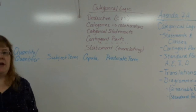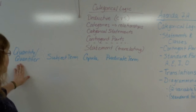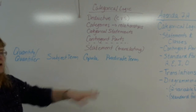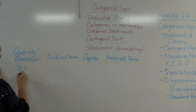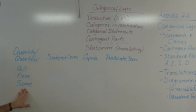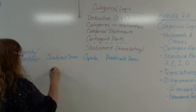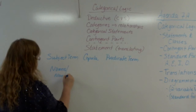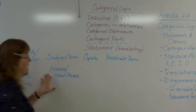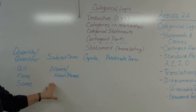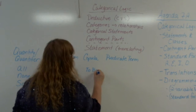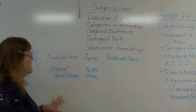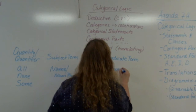We have a quantifier, subject term, copula, and predicate term. In our quantity we have three choices: all, none, and some. Subject terms always have to be nouns or noun phrases — the noun and its contingent stuff, adjectives and all that. The copula is our bridge, our to-be verb, and usually this is 'are.' The predicate term is again nouns and noun phrases.